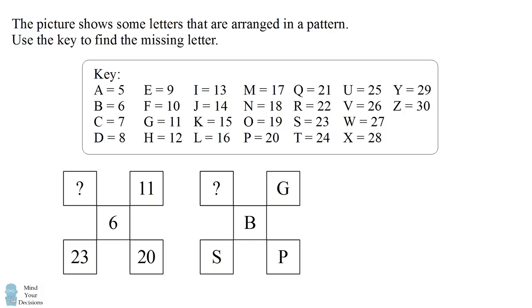Many people see the pattern that the numbers in the diagonal entries should have the same numerical sum. This would lead to the equation 11 plus 6 plus 23 would be equal to question mark plus 6 plus 20.